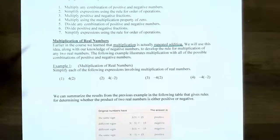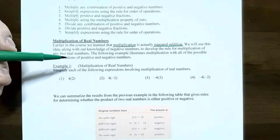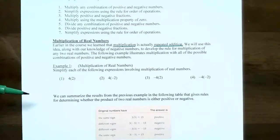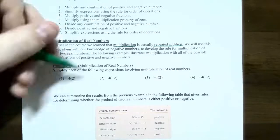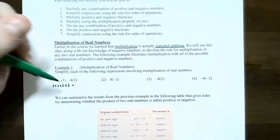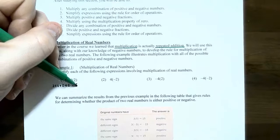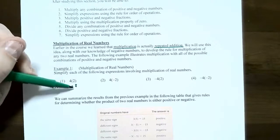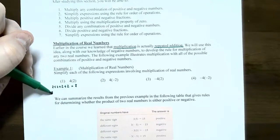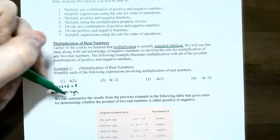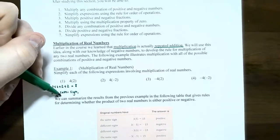Example 1: simplify each of the following expressions using multiplication of real numbers. Number 1: 4 times 2. Approaching this as repeated addition, 4 times 2 means you have four 2's added together, and the answer is 8. Notice that you had positive 4 and positive 2. When you multiply, the answer will be positive. So if the two numbers you're multiplying are the same sign, the answer will also be positive.